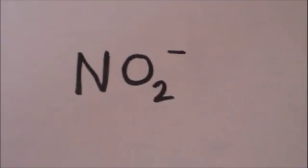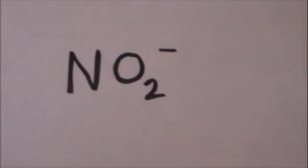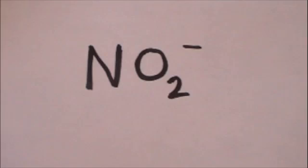Right now I want to show you how to draw Lewis dot structures for polyatomic anions and polyatomic cations. What that means is they've got covalent bonds but overall charge. Remember we've already memorized all those polyatomic anions.